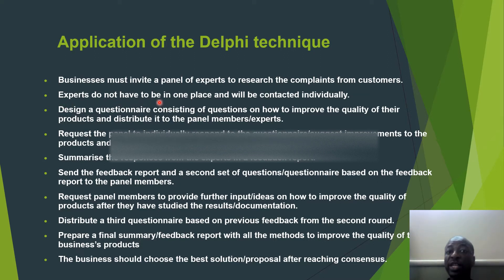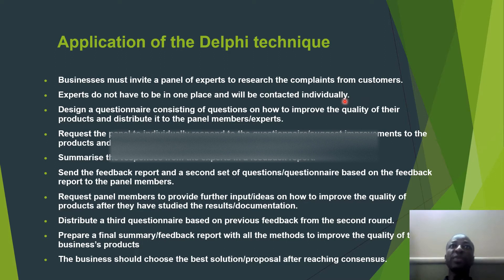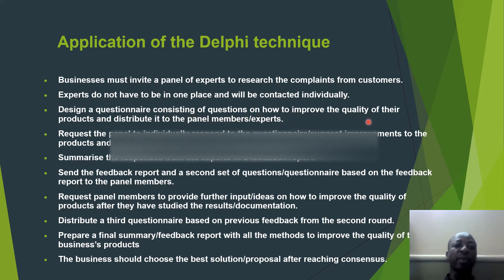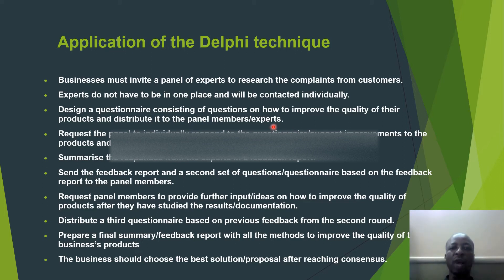Experts do not have to be in one place and will be conducted individually, meaning each expert can be in his office or different area — as long as they will not meet and will not be allowed to discuss. Step number three: design a questionnaire consisting of questions on how to improve the quality of the products and distribute it to the panel members. The questionnaire is about how to solve the problem which you have encountered in your business.